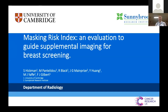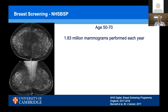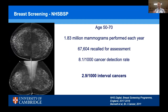In the UK, we have a National Breast Screening Programme which includes women routinely being screened every three years, aged 50 to 70, obtaining a two-view mammogram. From 2017 to 2018, 1.83 million women were screened as part of this programme, and 67,604 women were called back following their mammogram for further assessment. Cancers were detected at a rate of 8.1 per thousand, with interval cancers, as James detailed, occurring at a rate of 2.9 per thousand.